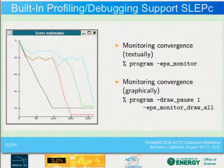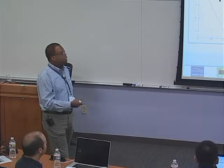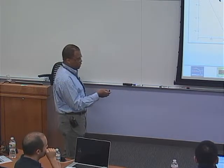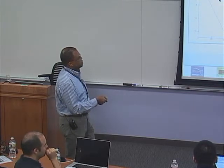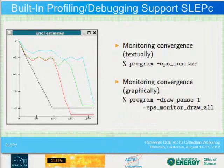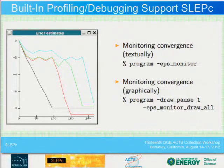You can also monitor convergence of the different eigenvalues using EPS monitor — very similar to KSP monitor or SNES monitor. You can ask the program to draw it for you using the draw interface. Use draw pause equal to some number of seconds so the display doesn't disappear when the program ends. Alternatively, you can output to a file and ship it to MATLAB to produce nice graphics via the MATLAB interface.